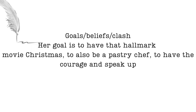How did I do this in my own novel? I got really clear on both my male and female characters — their goals, beliefs, and how they clash. My female character's goals are to have a Hallmark movie Christmas, to become a pastry chef, and to have the courage to speak up. However, the way she was raised is completely opposite to all three: she doesn't celebrate Christmas the way she loves, she's not a pastry chef, and she never speaks up for herself. That clash creates compelling tension.